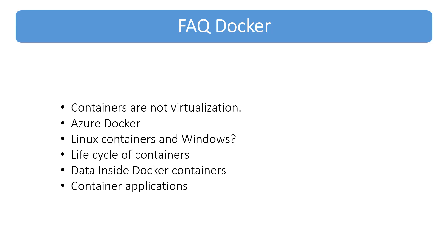A few words about container applications. If you want to deploy a container with an application, you need an application image. An image is a basic building block of a Docker container — like a template for creating containers. Docker provides a special service called Docker Hub. It allows you to download images from a central location, and it works like Git. You can build an image, commit it, and then push and upload it to Docker Hub.